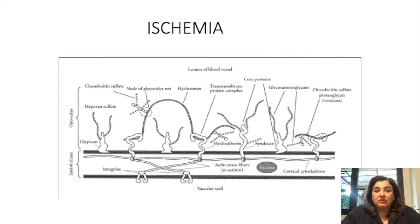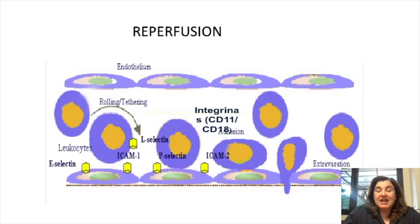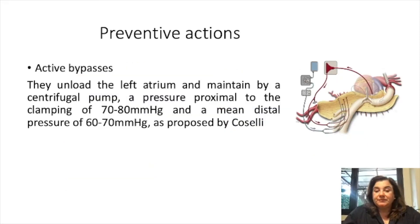Two events can occur: ischemia with vascular wall damage, and reperfusion with cellular extravasation. The preventive action is active bypass, which unloads the left atrium and maintains via a centrifugal pump a proximal pressure to the clamping of 70 to 80 millimeters of mercury, and a mean distal pressure of 60 to 70 millimeters of mercury, as proposed by Coselli.